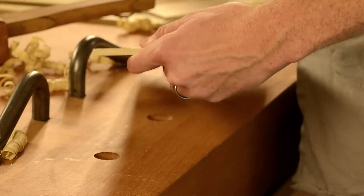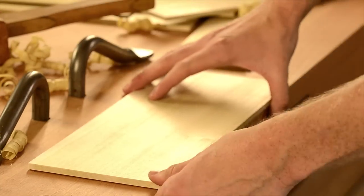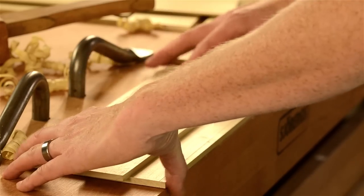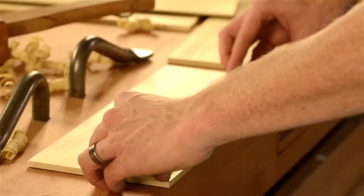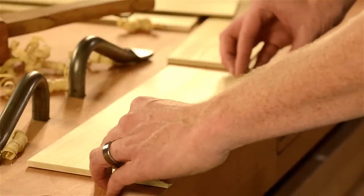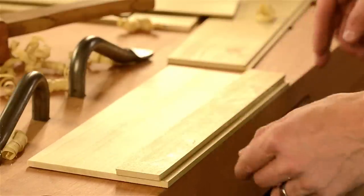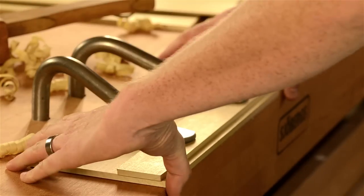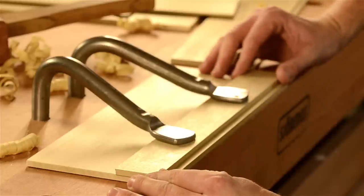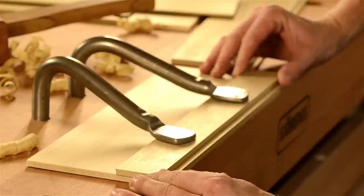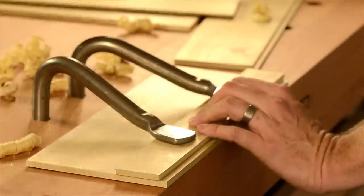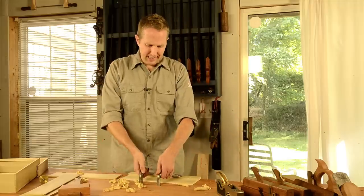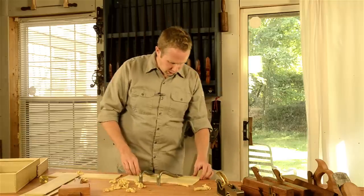Then I simply put it back here on the edge of the bench and put the fence up against the marking gauge line, line it right up, and smack those holdfasts down strong. You can see how well they hold the work down—that's what I like to hold it down with when I'm doing rabbets like this.